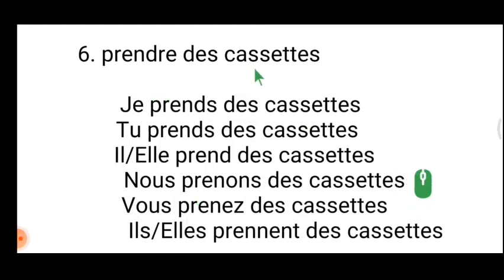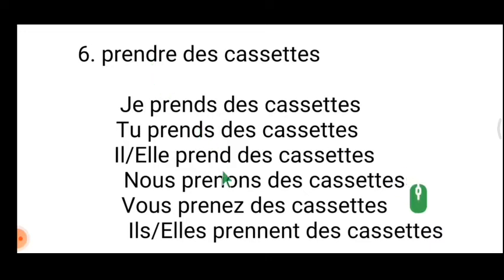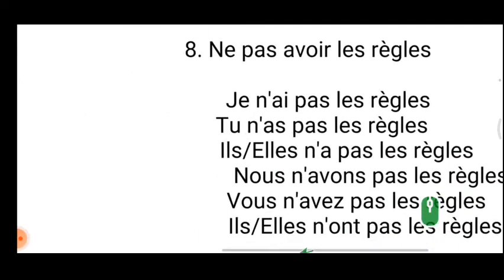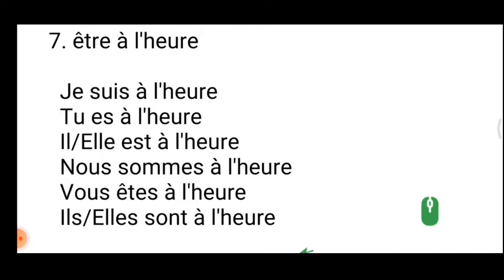Moving on to 'prendre des cassettes' — prendre is an important irregular verb. For the first three persons it has RE endings, but for nous, vous, and ils/elles you must memorize: the 'd' disappears. The radical becomes 'pren-' and the endings are 'ons, ez, nent.' This is only possible if you write and practice — don't just read, write and practice these verbs to get your 20 marks.